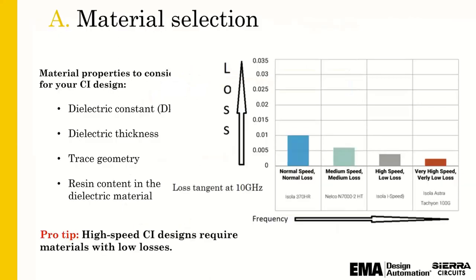In regards to material selection, picking the right material for the right application is the way to go. The key thing is that controlled impedance is not just governed by trace geometry — it's also governed a lot by the dielectric chosen and the material properties. When calculating controlled impedance, we use Maxwell's equations for PCB transmission lines, which renders a very accurate result. The models are all based on the dielectric constant, dielectric thicknesses, trace geometries, and resin content.